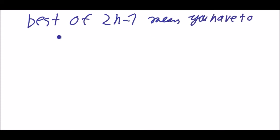Now let's have a look at how we can calculate for best of 2n minus 1. Best of 2n minus 1 means you have to win at least n sets.